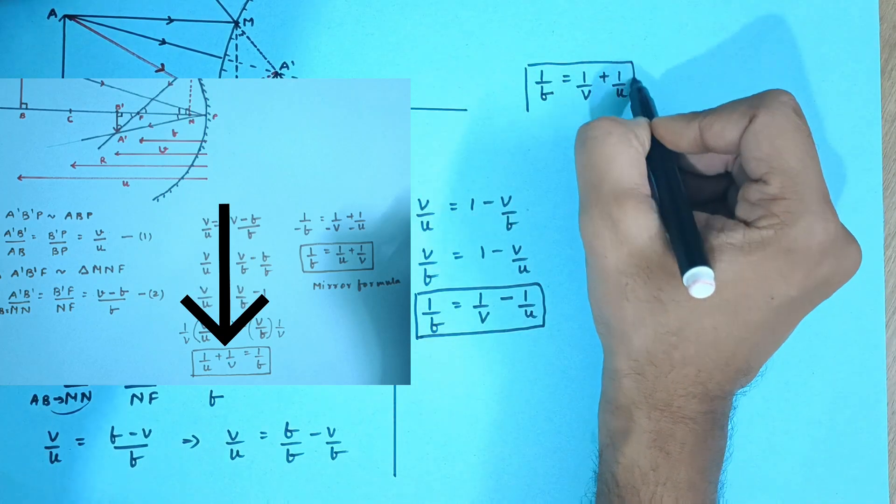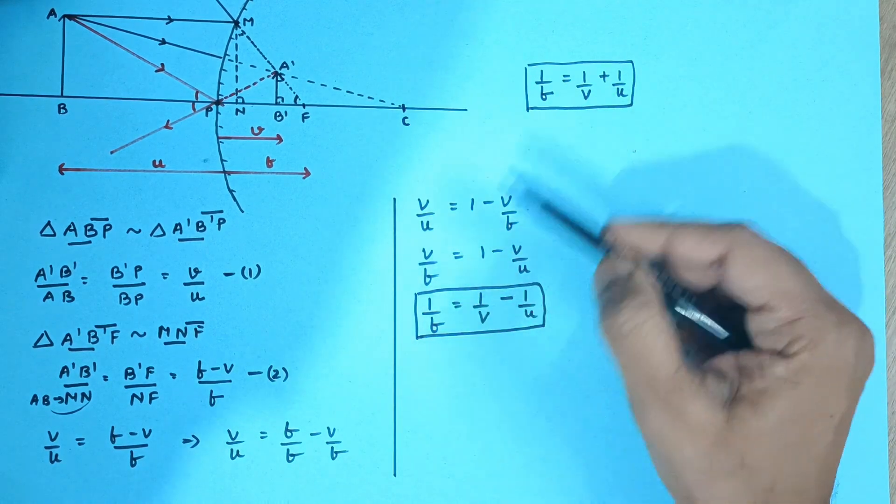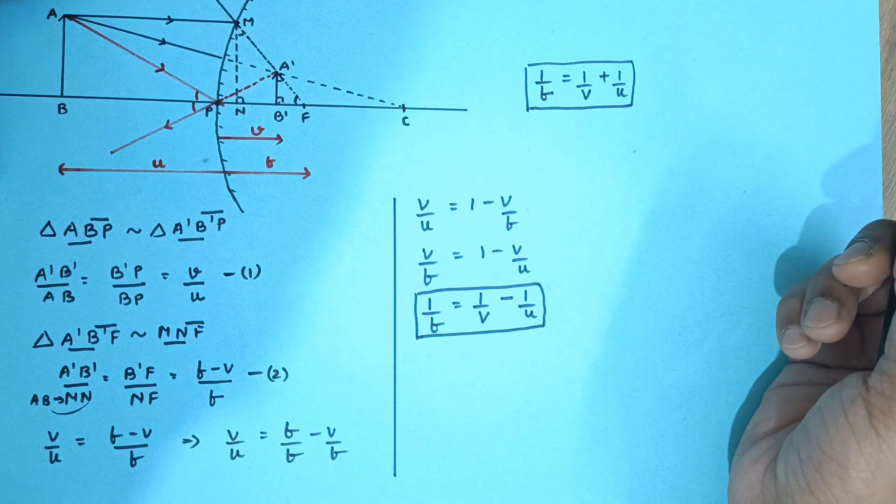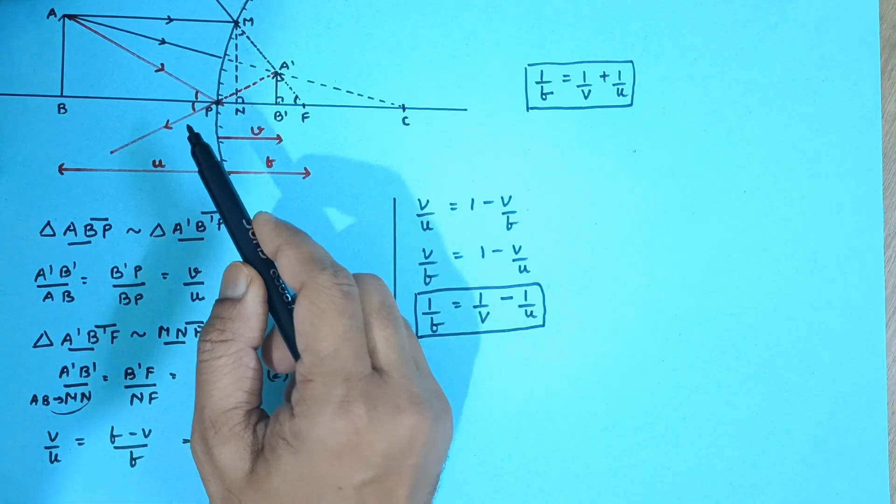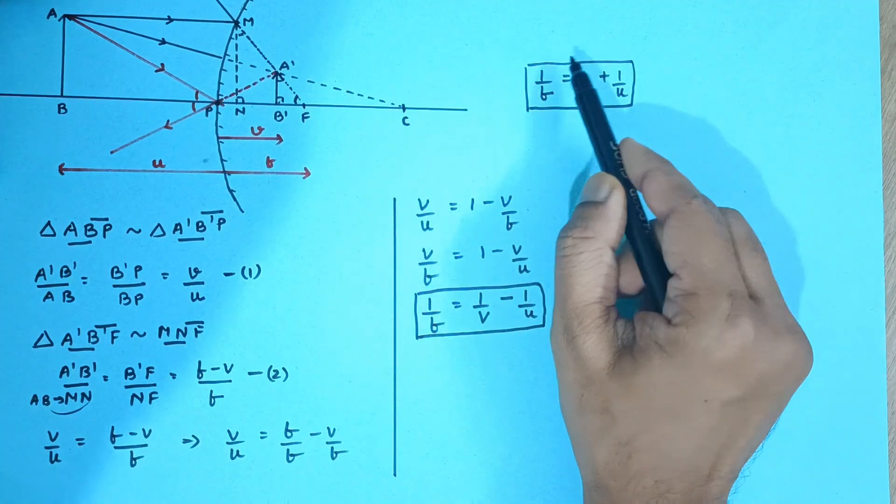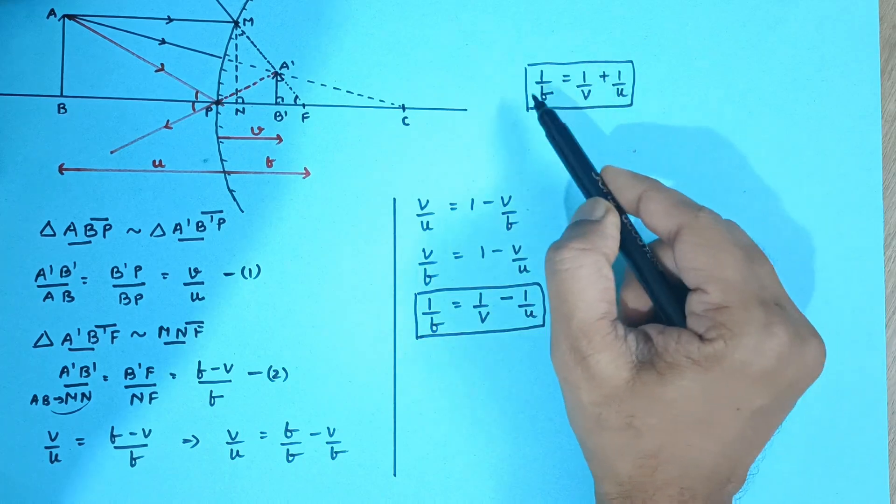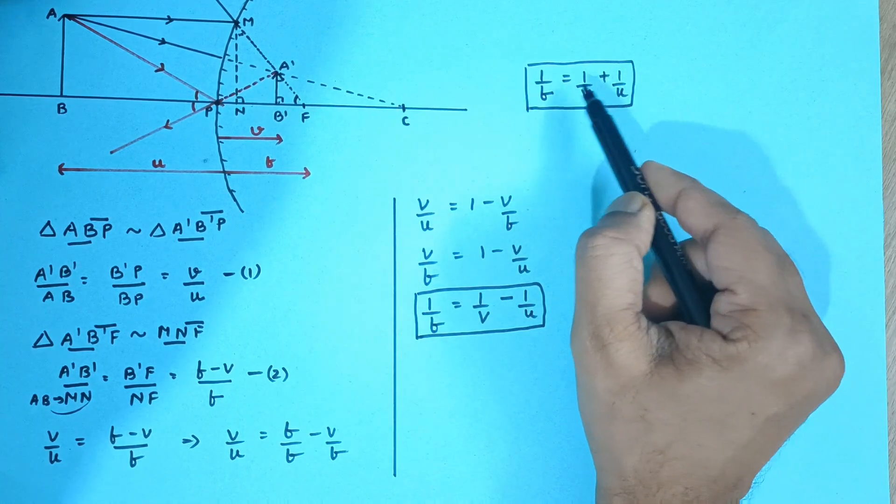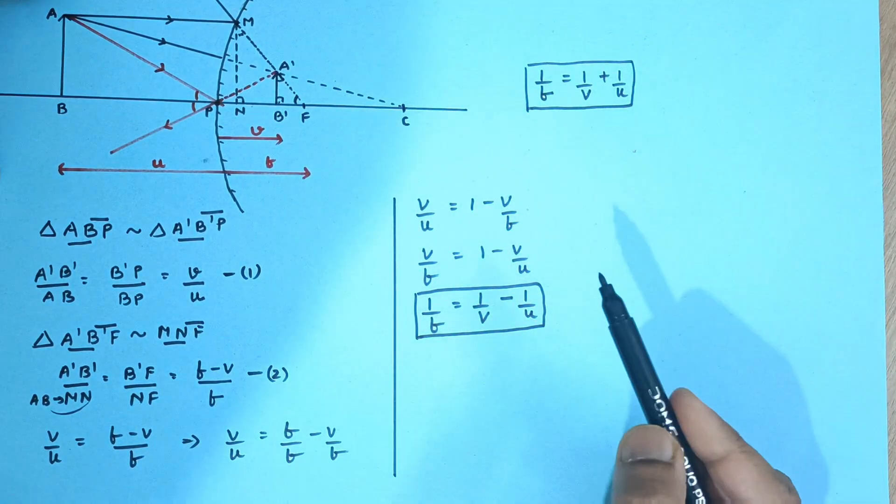So now what's the problem? Now you have to remember two different formulas for two different mirrors. And in the same way, this is a special case in which we took the object beyond C. Now if you keep on changing the position of the object, you will get different formulas. So for different cases, you will have to remember different formulas.